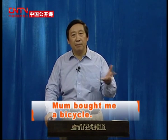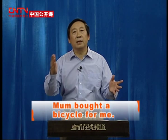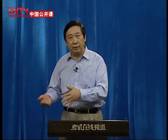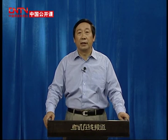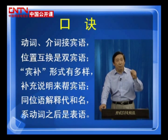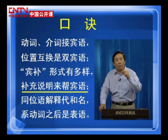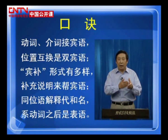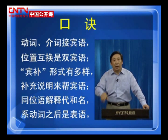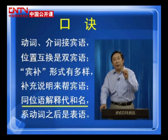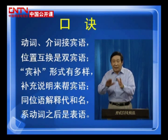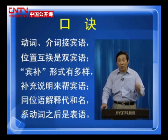Mom bought me a bicycle，换过来说，mom bought a bicycle for me。Buy me a bicycle，buy a bicycle for me，都可以互换。接下来是宾补，宾补形式多样化，用来补充说明宾语。宾补可以是不定式、名词、形容词。同位语和代词、名词的作用是等同的，所以叫同位语。